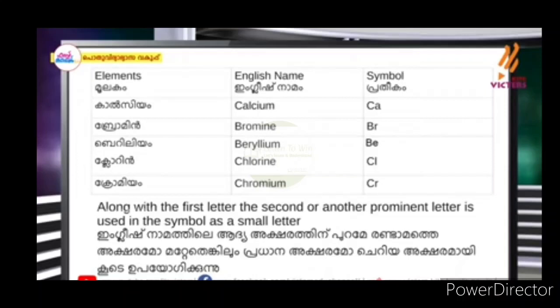For example, we call calcium — Ca. Calcium: C and A are used. Chlorine is Cl — C and L. Chromium is Cr. So if you want to write a symbol, you can write it using these letters.